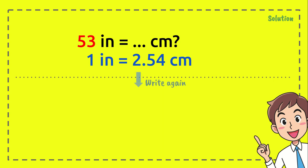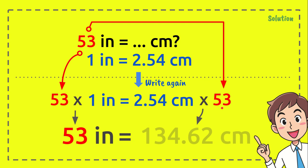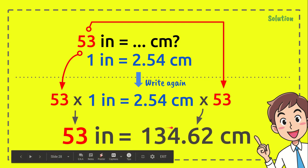And after that, you need to write the formula again from here and we're going to write it here. And now, we're going to multiply 2.54 with 53 and 1 inch with that number as well. Now, 53 times 1 inch equals 53 inches and 2.54 centimeters times 53 equals 134.62 centimeters.